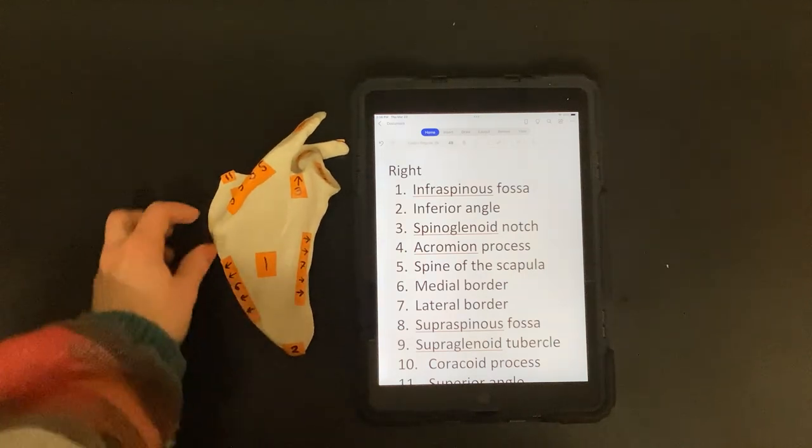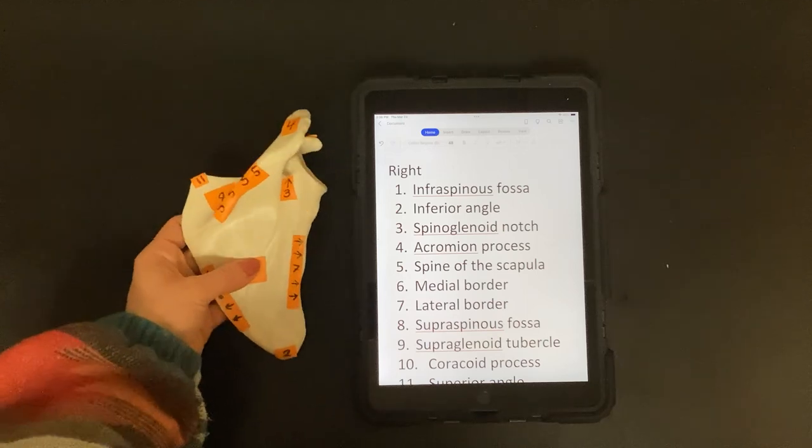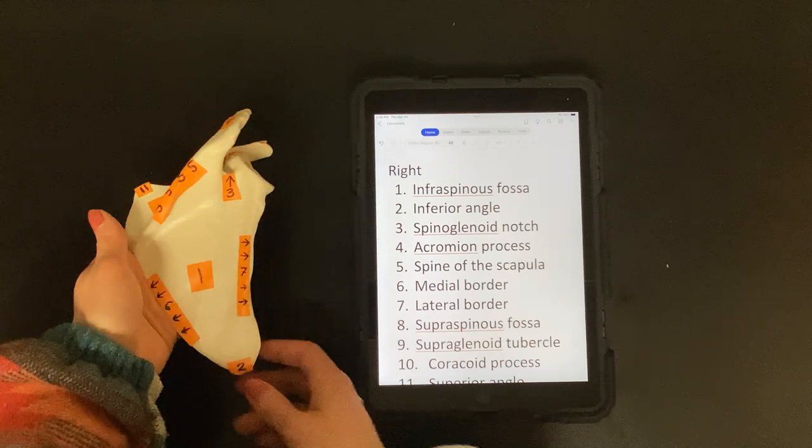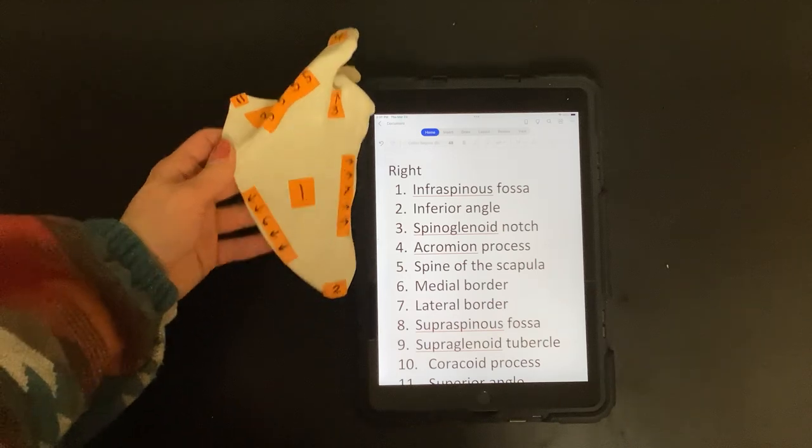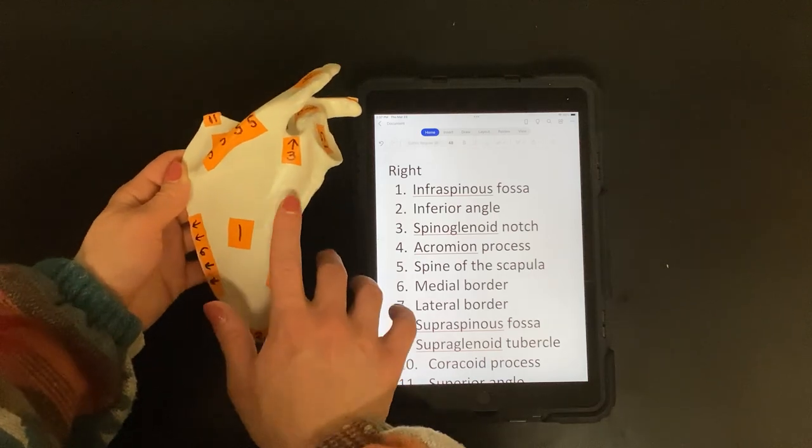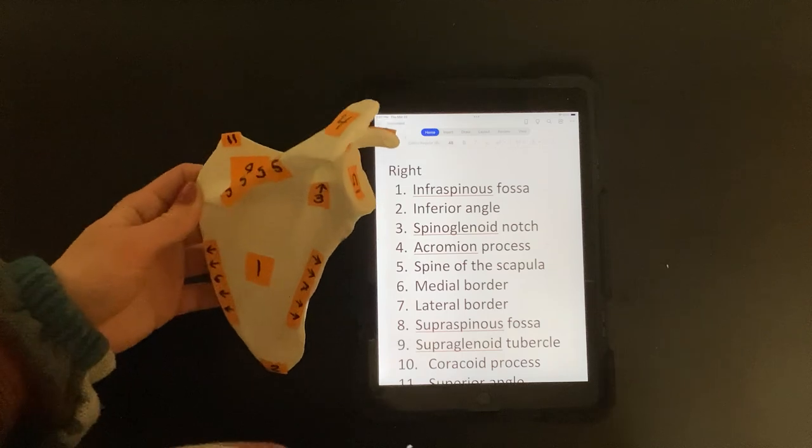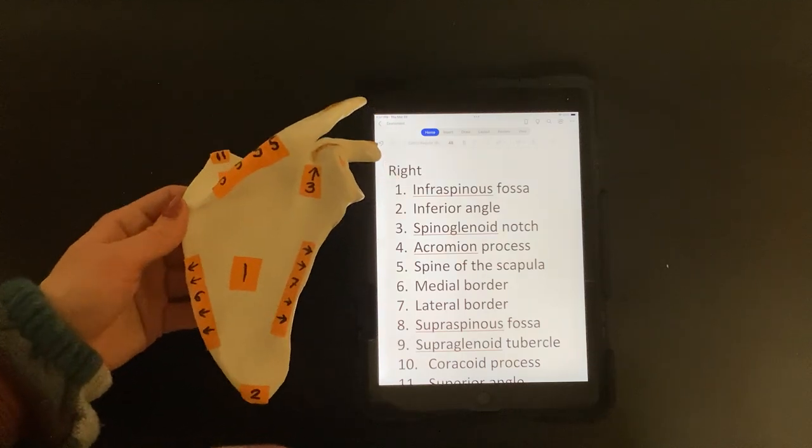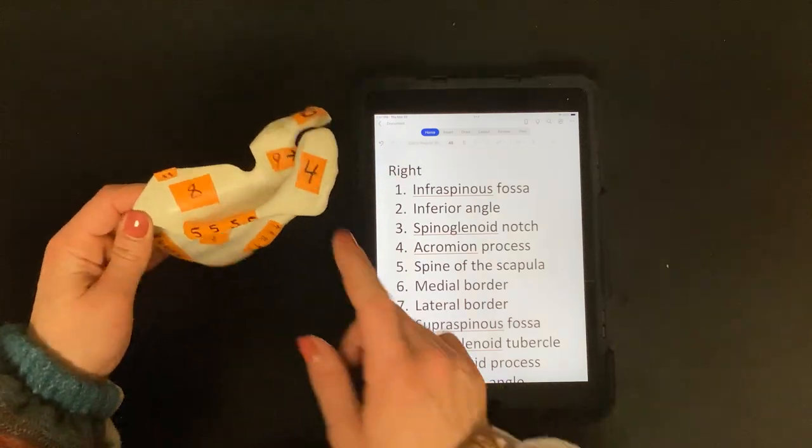Number one is the infraspinous fossa. Two, this is your inferior angle. Three is the spinoglenoid notch. Four is the acromion process.